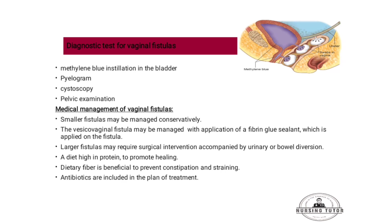The vesico-vaginal fistula may be managed with application of fibrin glue sealant applied on the fistula, which is made from fibrinogen and thrombin as clotting factors. Larger fistulas require surgical intervention accompanied by urinary or bowel diversion, followed by surgical stitching.